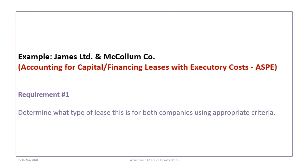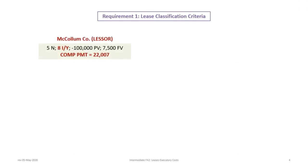This tutorial is based on the James Limited and McCollum Company example, again relating to accounting for capital leases with executory costs, this time under ASPE. The first requirement will be to determine the type of lease for both companies using appropriate criteria. In order to assess the lease criteria, we first have to calculate the payment determined by the lessor.